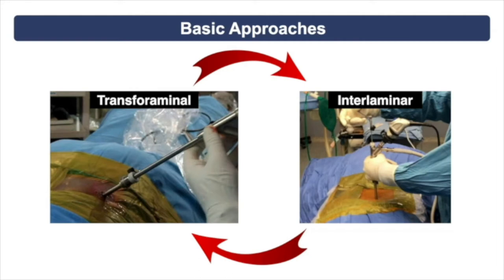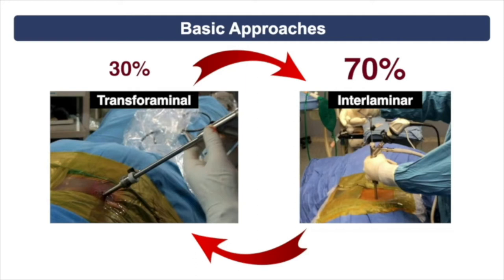There is no single approach able to tackle all kinds of pathologies. Although the interlaminar approach has been described much later, over the years it has become a dominant partner because of the variety of indications it addresses. The indications for the transforaminal approach are limited to about 30% of total pathologies, whereas the interlaminar approach, because of its versatility, is able to tackle nearly 70% of all pathologies.